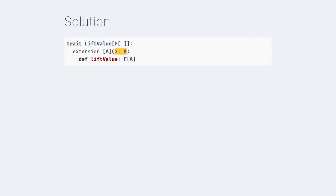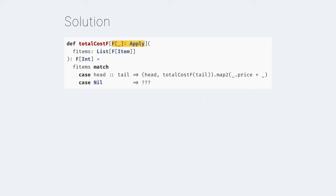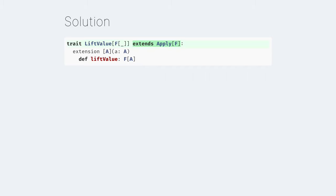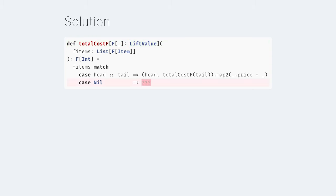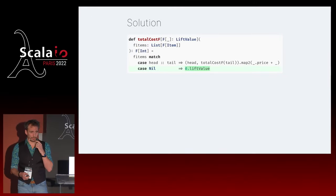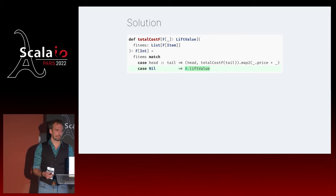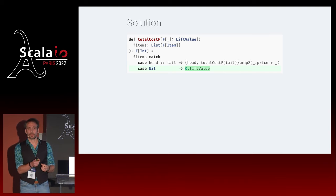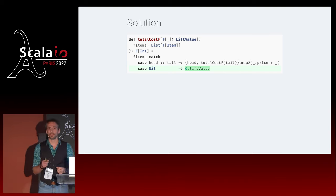Then we have a problem: we want to say the empty basket has a cost of zero - but zero within some F. We don't know how to lift a value into some F; we know how to lift functions, but not values. So we create another type class called lift value, whose primary operation lifts a value A into an F of A. And of course it needs F to be an apply too. Now the code writes itself, and we have a solution. But I'd argue it's not an actual solution to our problem, because what we were trying to do was reuse code - and we re-implemented total cost rather than reusing it.